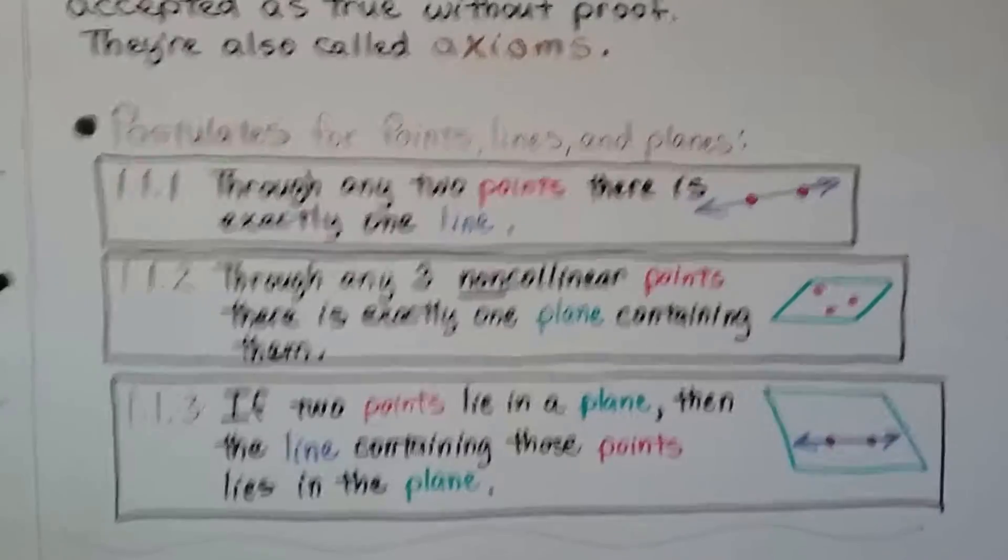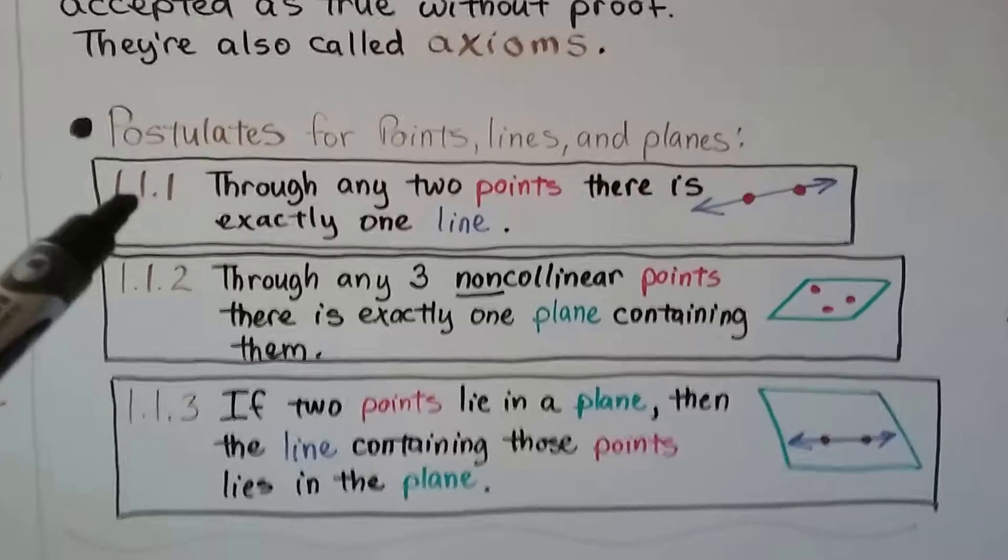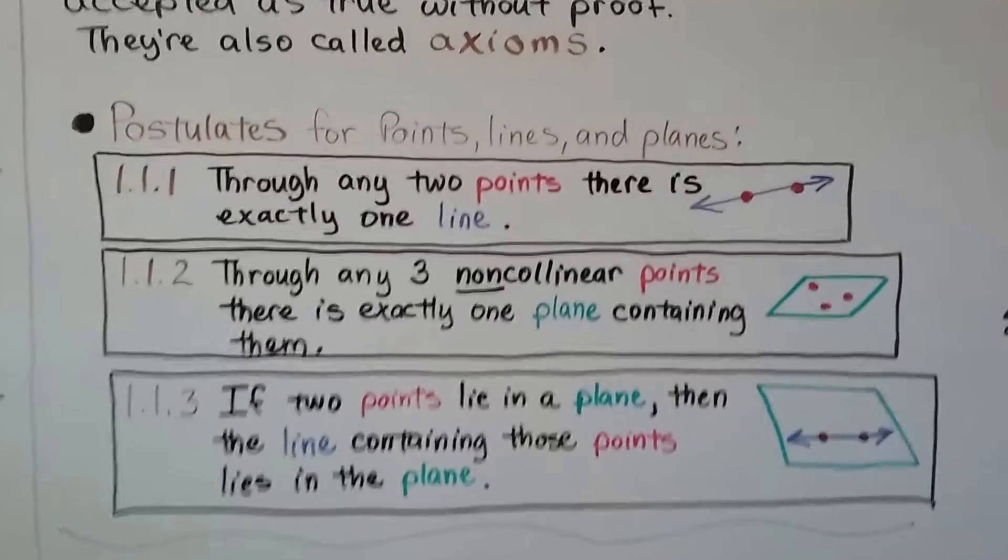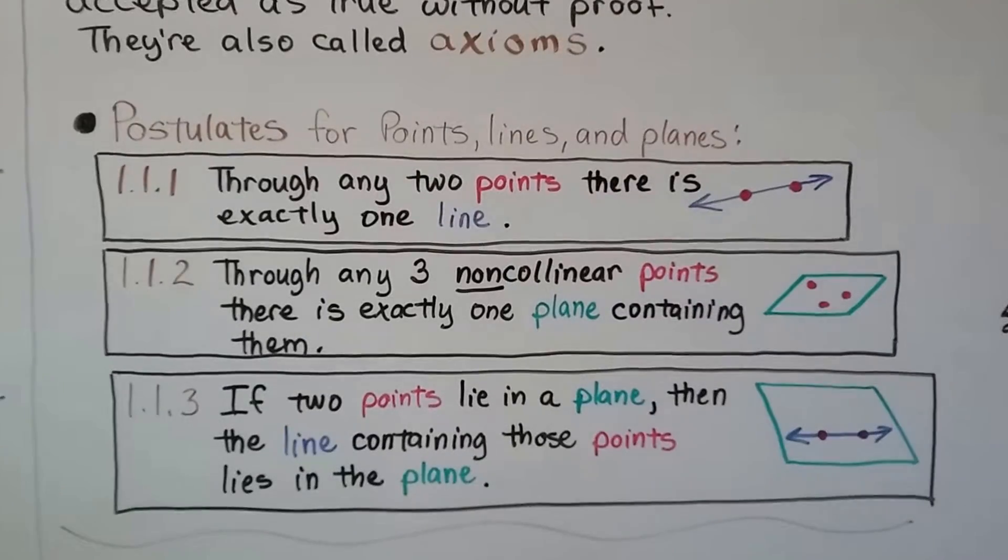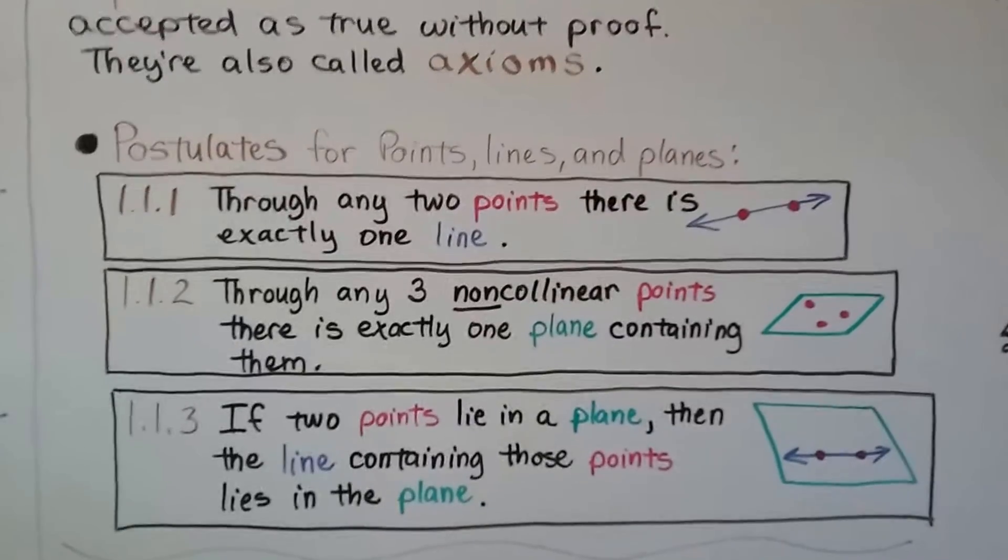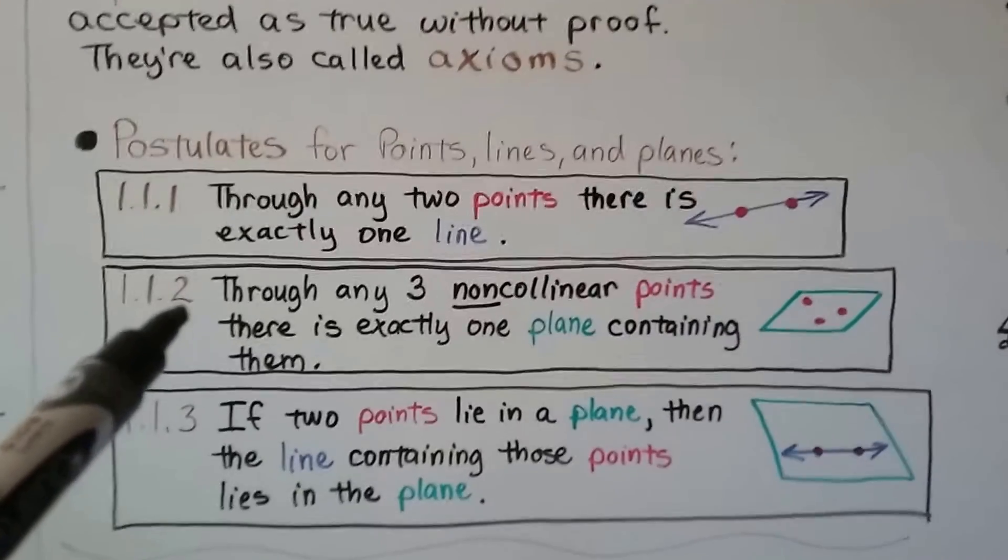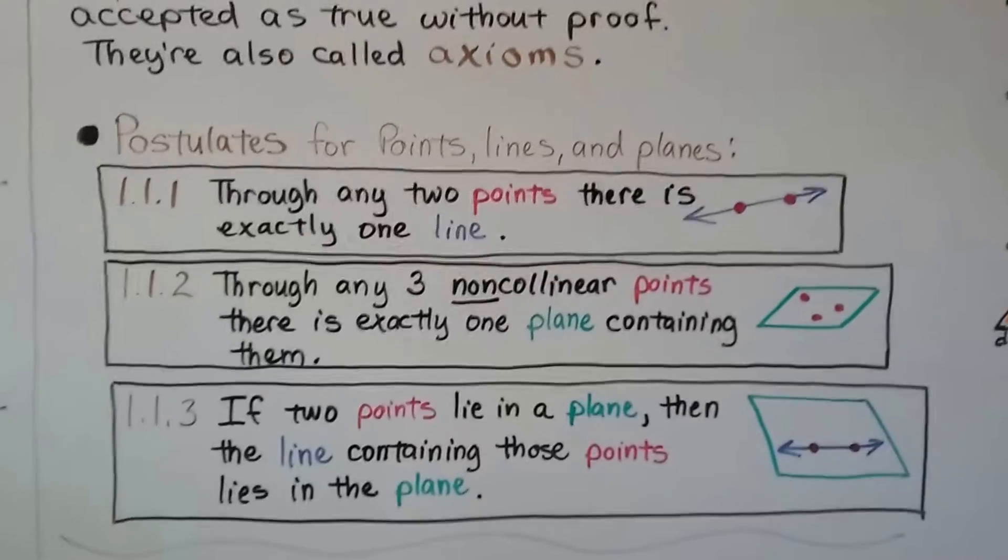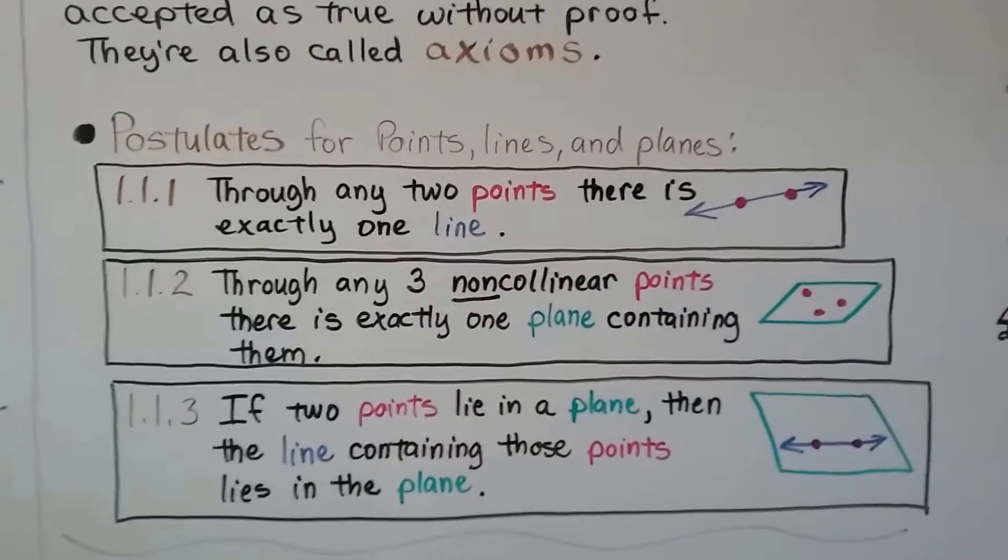And if you look at how they're numbered, this is Chapter 1, Lesson 1, Postulate 1. That's why it's 1.1.1. And the next one is Chapter 1, Lesson 1, Postulate 2. And this is Postulate 3. That's why they're labeled this way.